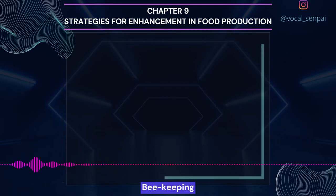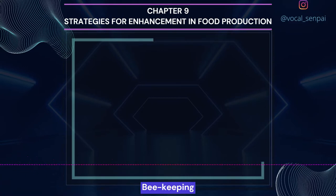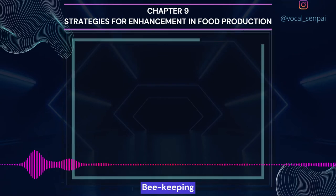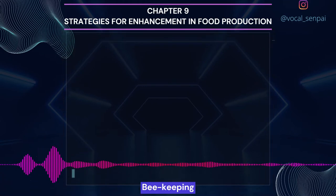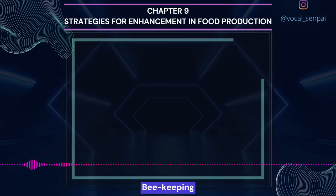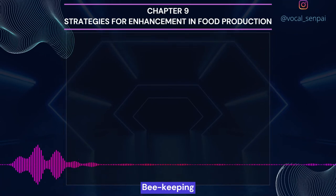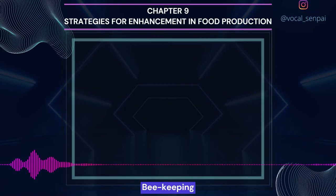Beekeeping can be practiced in any area where there are sufficient bee pastures of wild shrubs, fruit orchards and cultivated crops. The most common species is Apis indica. The following points are important for successful beekeeping: knowledge of the nature and habits of bees, selection of suitable location for keeping beehives, catching and hiving of swarms, management of beehives during different seasons, and handling and collection of honey and beeswax. Bees are the pollinators of many crop species such as sunflower, brassica, apple and pear, improving both crop yield and honey yield.